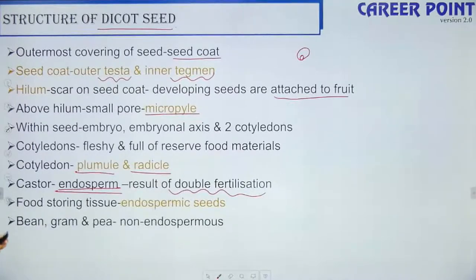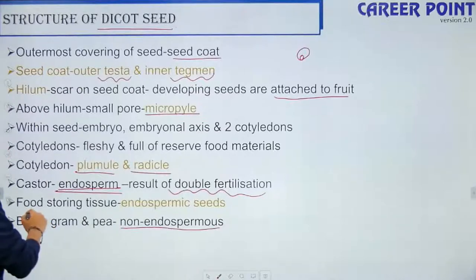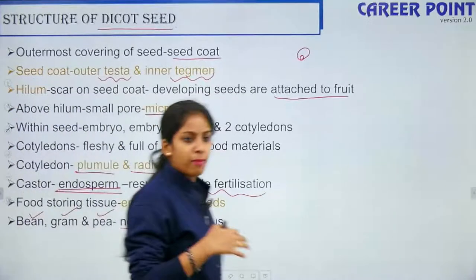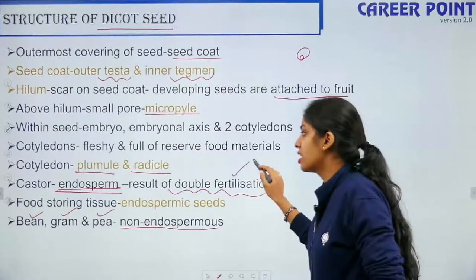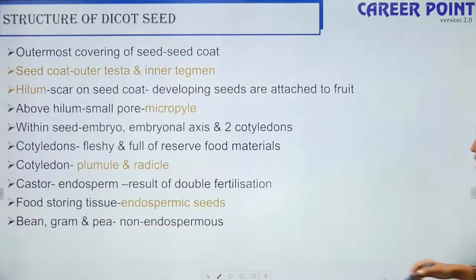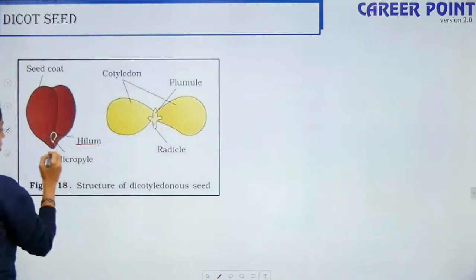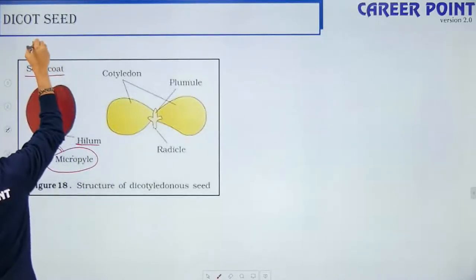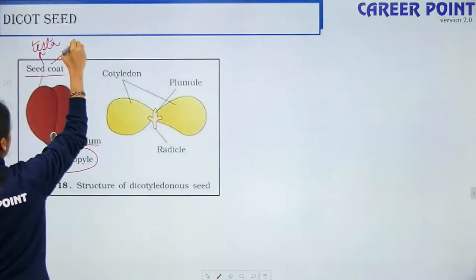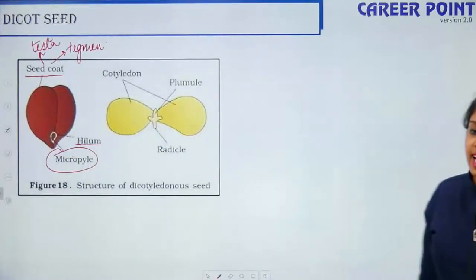Mostly dicots are non-endospermous — bean, gram, and pea consume the endosperm before development. Castor is the exception in dicots as it retains endosperm. The outer layer of the seed coat is the testa and inner is the tegmen. Above the hilum scar is the micropyle opening.